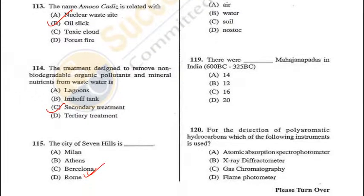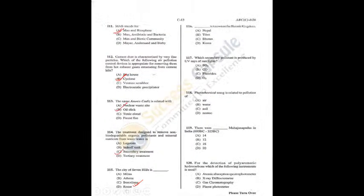Question 120: For the detection of polyaromatic hydrocarbons, gas chromatography is used — C is the correct answer. To recap: Q116 = D, Q117 = D, Q118 = A, Q119 = C, Q120 = C.